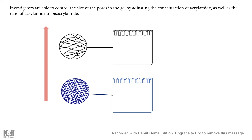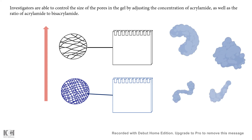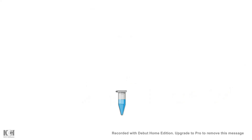The ratio of acrylamide to bisacrylamide can be varied to get different pore sizes. This pore size difference is important — for example, if we need to separate a very small protein, we would prefer using a higher concentration gel. Different protein sizes require the proper gel percentage in order to resolve them.